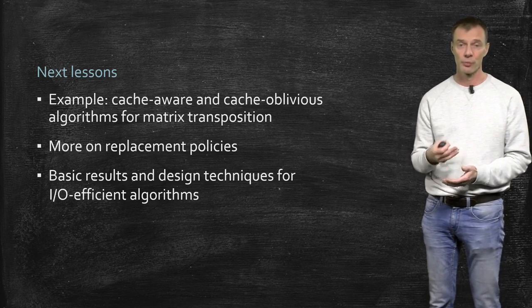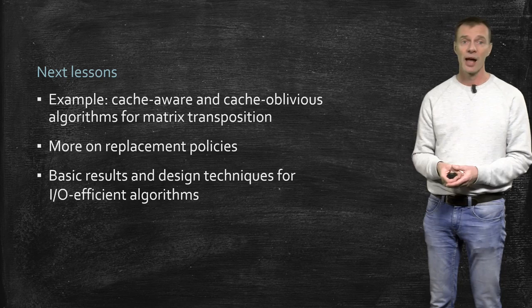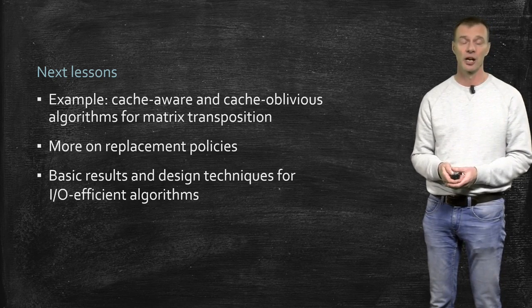So the assumption that a cache-oblivious algorithm has an optimal replacement policy is okay. And after that we're going to look at a lot of different results, for instance on sorting in the I/O model.